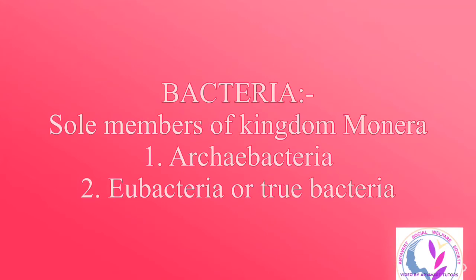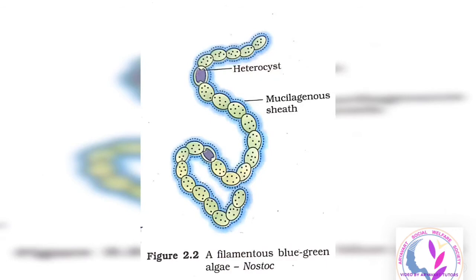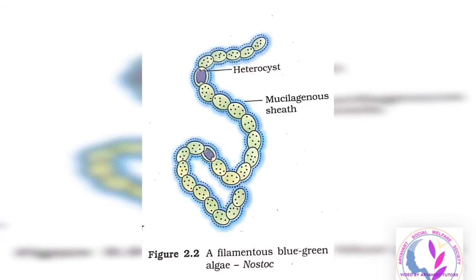Eubacteria include nitrogen-fixing bacteria and filamentous forms like BGA — Blue-Green Algae. For example, Nostoc, in which heterocysts help with nitrogen fixation, and a mucilaginous sheath covers it. So the answer is Monera.